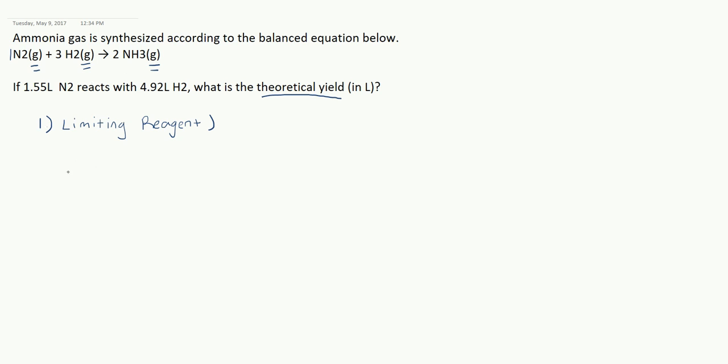So what we're going to consider in order to figure out the limiting reagent is the relationship between my two reactants, H2 and N2. H2 over N2, according to the formula given here, should react in the ratio of three to one.